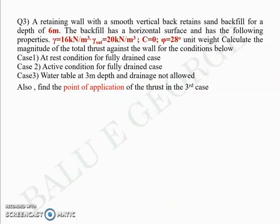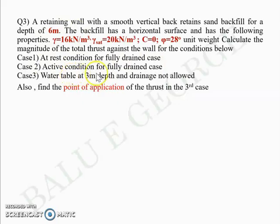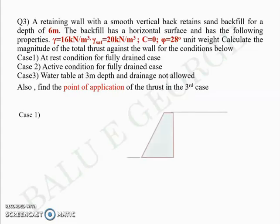The next question involves a smooth vertical retaining wall with backfill properties: bulk unit weight γ = 16 kN/m³, saturated unit weight γ_sat = 20 kN/m³, c = 0 (cohesionless), phi = 28 degrees, wall height = 6 m. Three conditions are given: (1) at-rest condition, fully drained; (2) active condition, fully drained; (3) water table at 3 m depth, drainage not allowed — and you must also find the point of application of thrust for case 3.